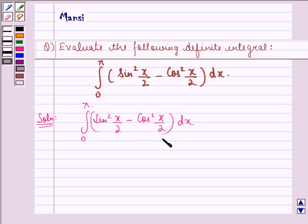Now, we see that this is the formula for minus cos x. So, this will be equal to the integral from 0 to π of -cos x dx.